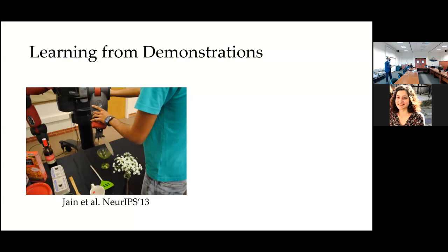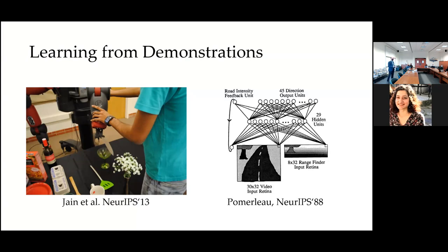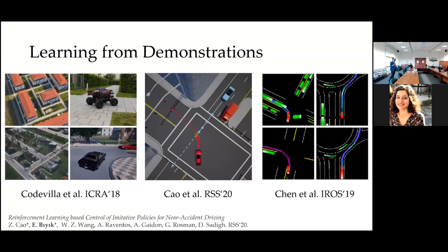One very common way to learn human objectives is learning from demonstrations. The human gives a demonstration, and from that demonstration we learn a policy or reward function. The idea of behavioral cloning has been around for years and works great in many settings, for example people use it for driving. But the problem is we often need something in addition to behavioral cloning — for example, training multiple policies and learning to optimally switch between them, or adding safety controllers on top.